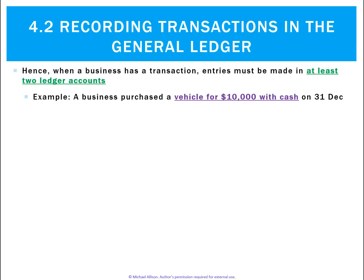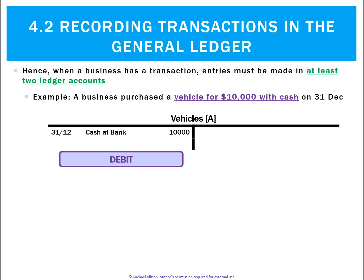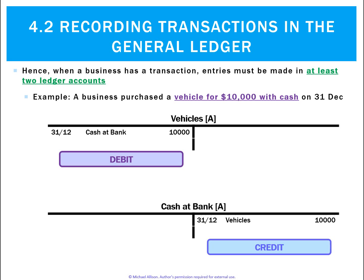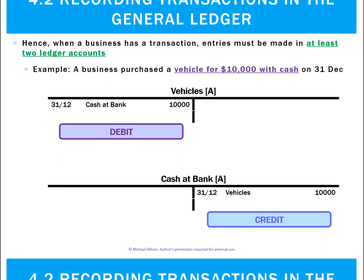For example, a business purchased a vehicle for $10,000 cash — let's pretend there's no GST. The ledgers that would be affected are vehicles, which is an asset, going up on the debit side, and cash at bank going up on the credit side. So you can see for the debit, there's a matching credit.